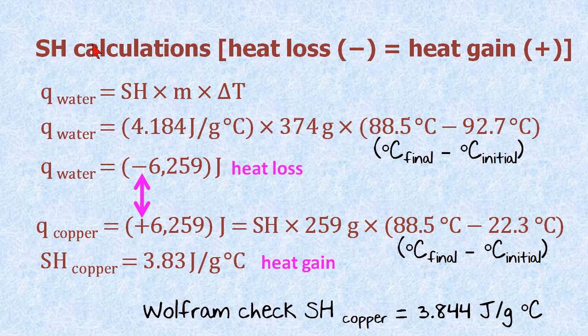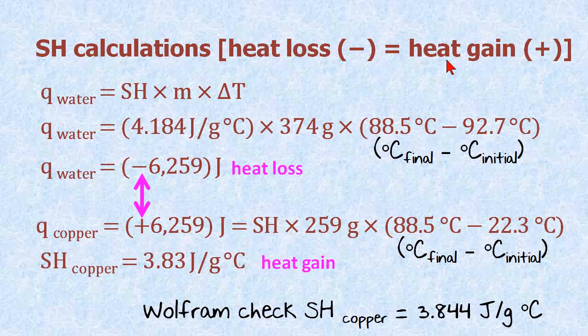Here's our calculations. Remember, heat lost is equal to heat gained. So we look at the water, the specific heat times the mass times the change in temperature is equal to heat of the water. Again, the key is the heat that was lost by the water is gained by the copper. So we plug in the numbers here. The specific heat of water is 4.184 joules per gram degree C. We weighed the object, which is the water, and it was 374 grams.